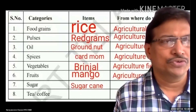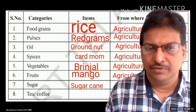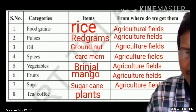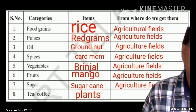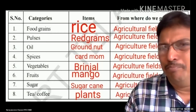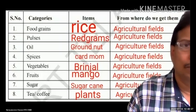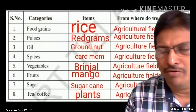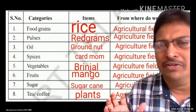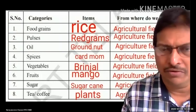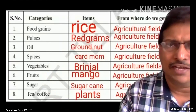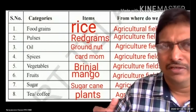Sugarcane is grown in agricultural fields. Tea and coffee are plants available in hill areas — they are also a part of agriculture. Based on this table, the important things we need for daily consumption and survival — the final answer is that the majority came from agriculture. So how do we get these goods? Can we go directly to the agricultural field and take them?